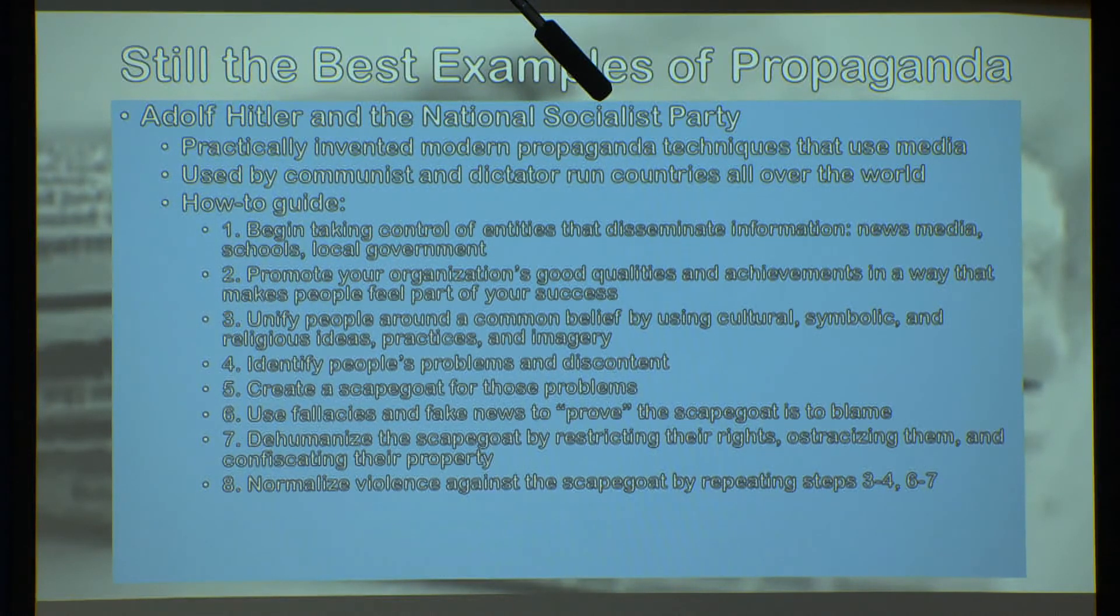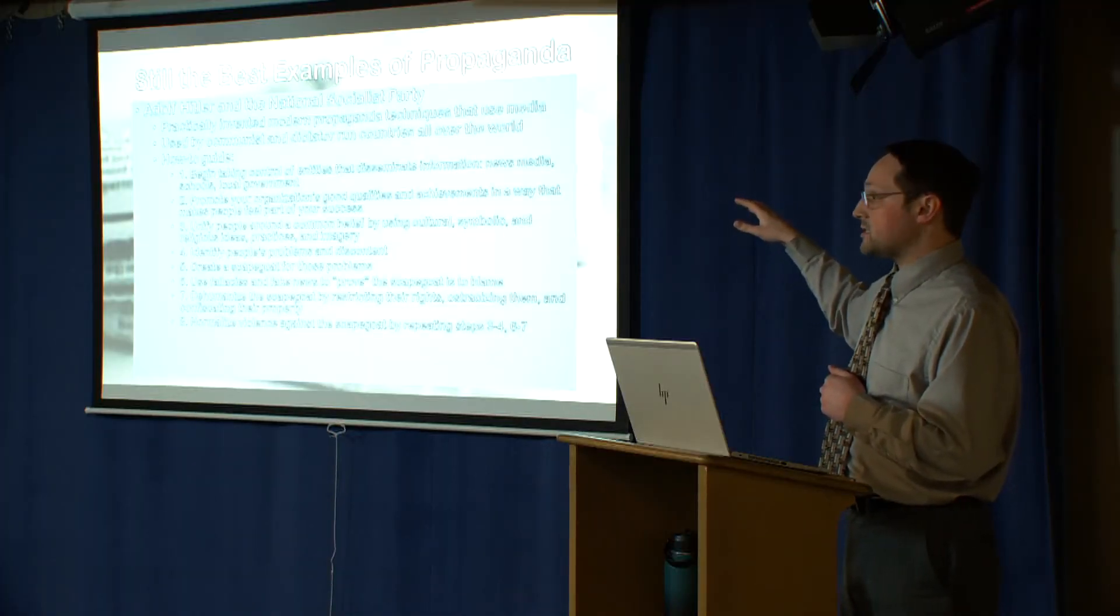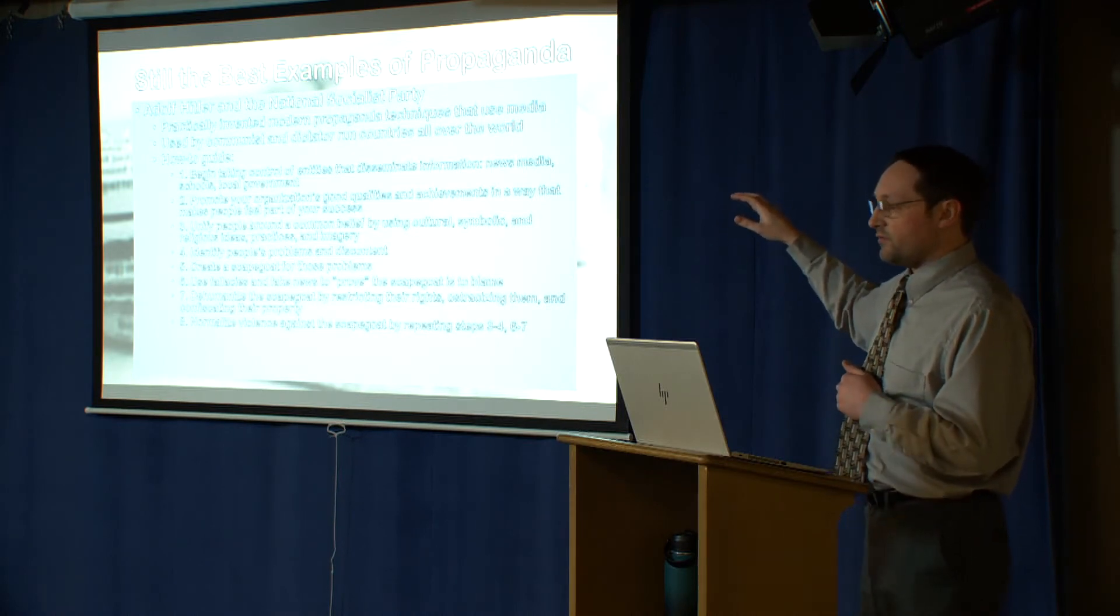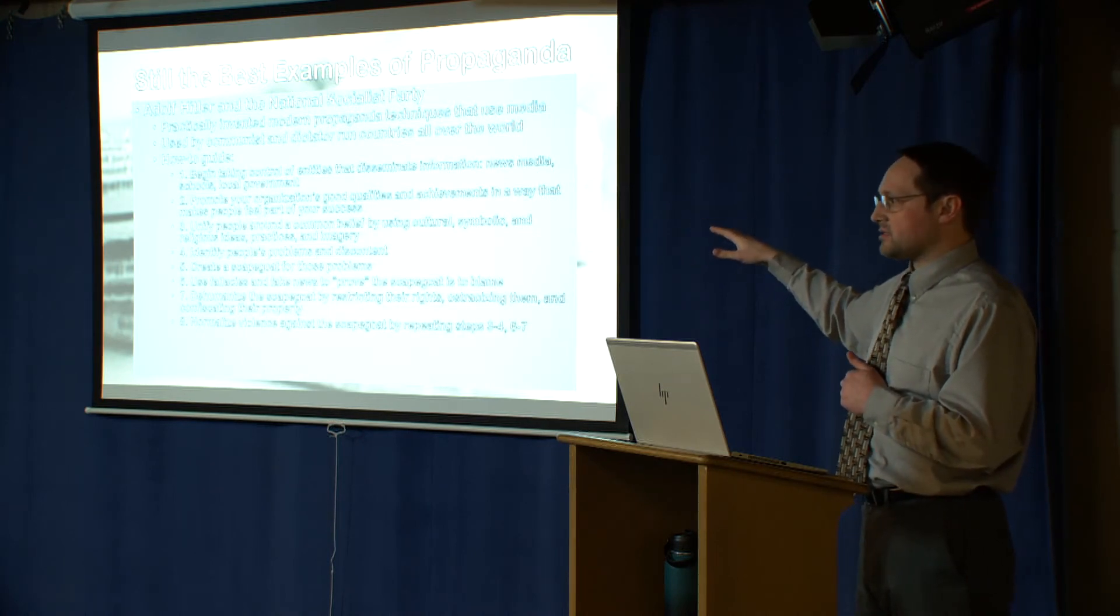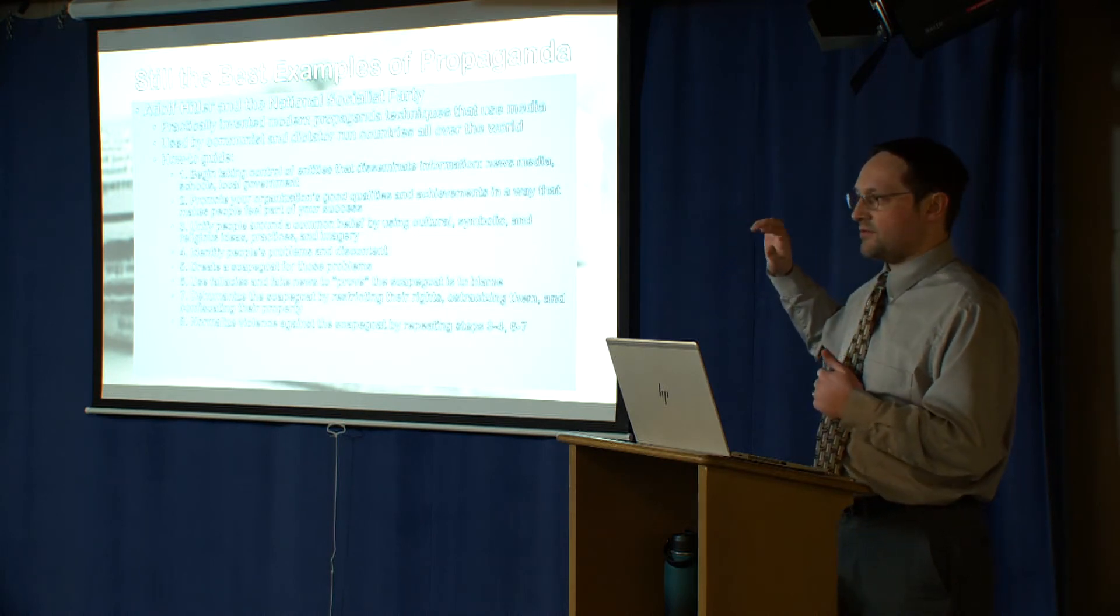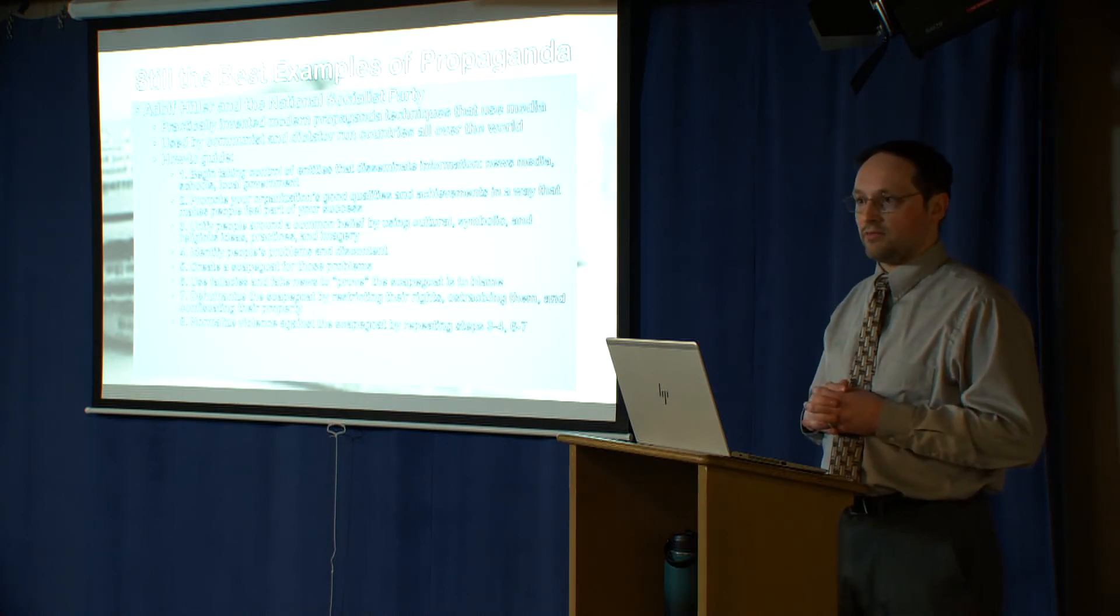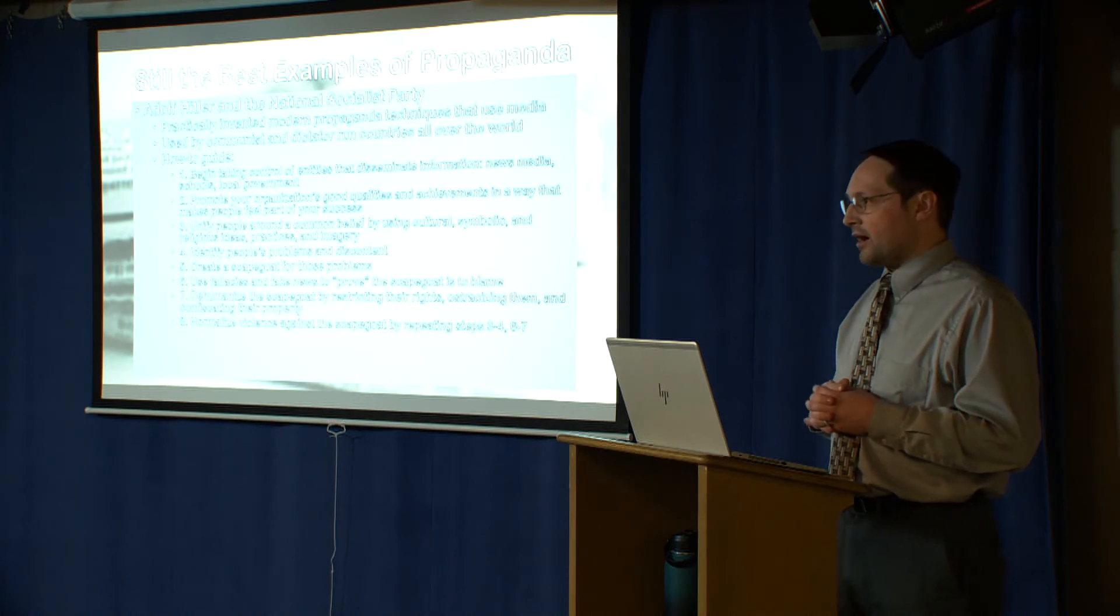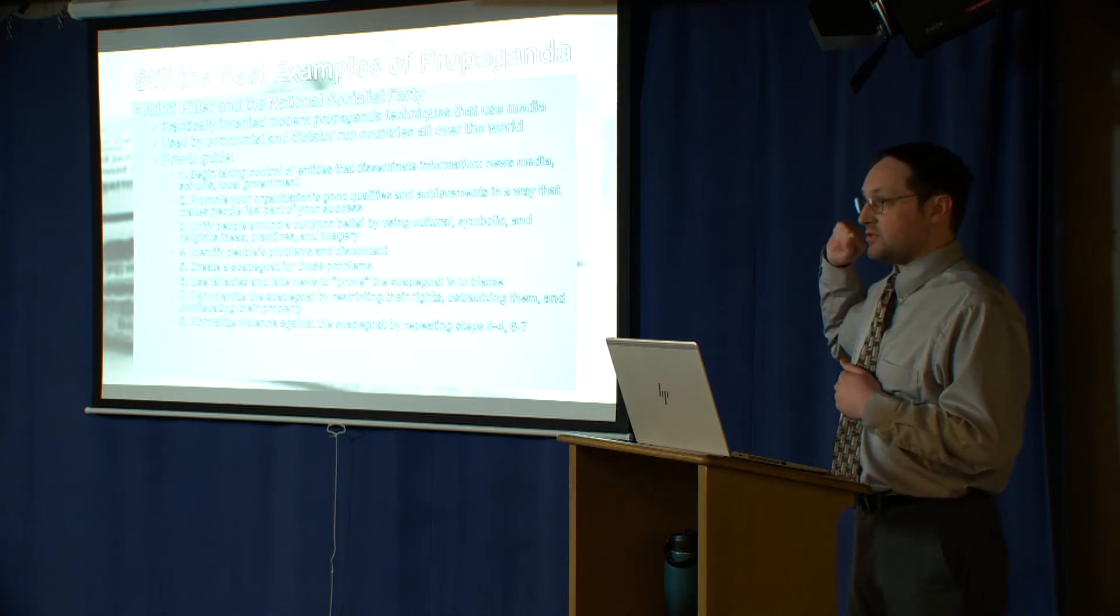Hitler unfortunately was a master at this. Think about the iconography and the visual symbols that he used to get people to do what he told them: the use of the swastika, the use of the Roman eagle, the use of certain types of parades and other things that were meant to make people feel like they belonged, that they were part of something that had a long history and was great and noble. Identify people's problems and discontent. Create a scapegoat for those problems. Use fallacies and fake news to prove the scapegoat is to blame. Dehumanize the scapegoat by restricting their rights, ostracizing them, and confiscating their property. Normalize violence against the scapegoat by repeating steps three, four, six, and seven. We look at this and we read this and it seems so sinister, and it's very sobering. But it is extremely effective, and that's what makes it scary.